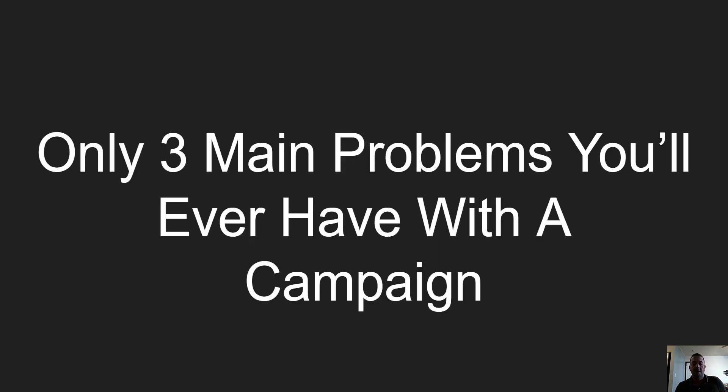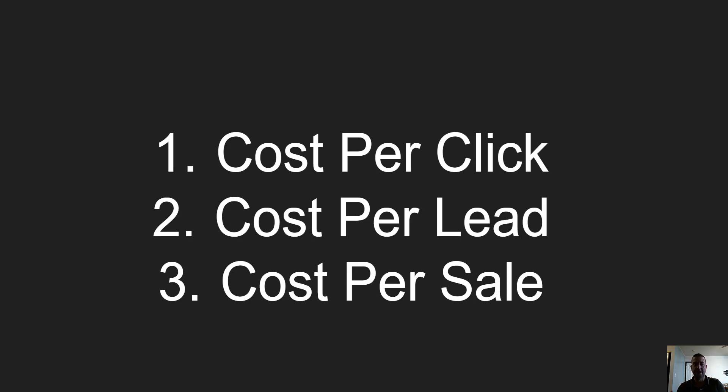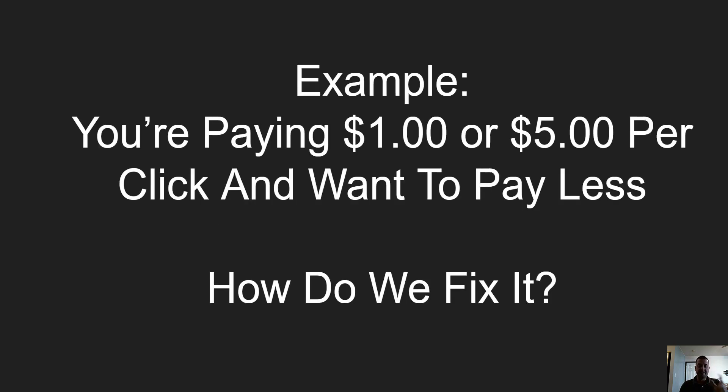What's going on everybody, we're back again with lesson number five on troubleshooting a campaign — how to fix a campaign. If you've already started Facebook campaigns and you have gotten bad results, or your cost per click is getting higher, we're going to go over the main ways to fix that. It's really not that complicated. You only have three main problems you'll ever have with a campaign: your cost per click, your cost per lead, or your cost per sale.